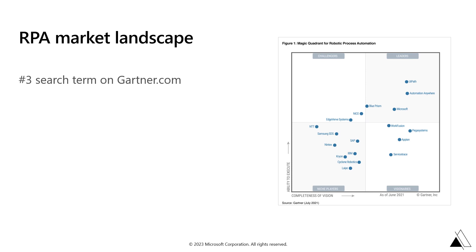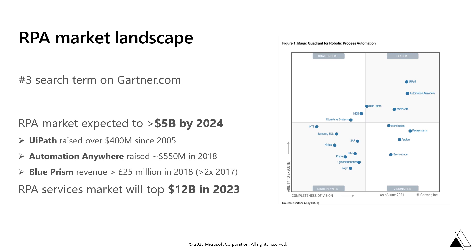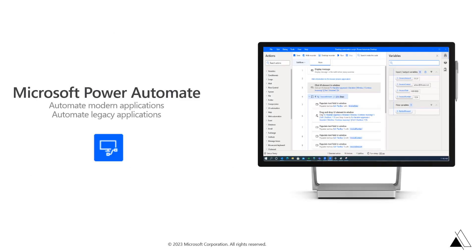Let's have a look at the RPA market landscape. It is the third most searched term on Gartner.com, and the market is expected to be greater than $5 billion by 2024, with the services market topping $12 billion in 2023. Desktop flows broaden the existing robotic process automation capabilities in Power Automate and enable you to automate all repetitive desktop processes. It's quicker and easier than ever to automate with the new intuitive Power Automate desktop flow designer, using pre-built drag-and-drop actions or recording your own desktop flows to run later.